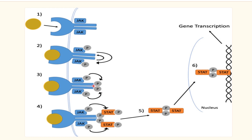After the JAKs phosphorylate each other, they phosphorylate the tail of the receptor. The tail then becomes a docking site for STAT — Signal Transduction and Activation of Transcription. STATs attach to the receptor tail, JAK phosphorylates the STATs, and the phosphorylated STATs are released into the cytoplasm and travel to the nucleus, where they induce mainly protein formation, or less commonly prevent it.